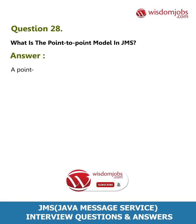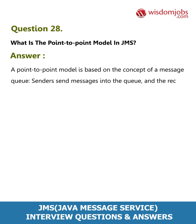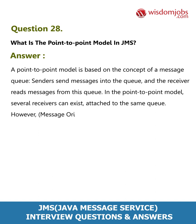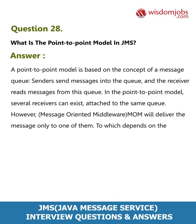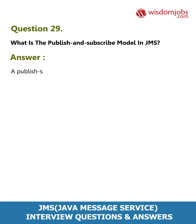Question 28: What is the point-to-point model in JMS? Answer: A point-to-point model is based on the concept of a message queue. Senders send messages into the queue and the receiver reads messages from this queue. Several receivers can exist attached to the same queue; however, the message-oriented middleware (MOM) will deliver the message to only one of them, depending on the MOM implementation.